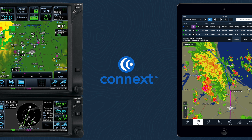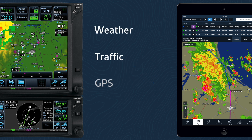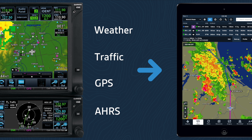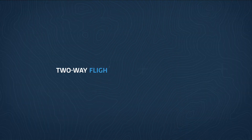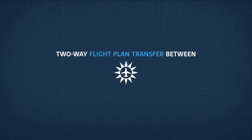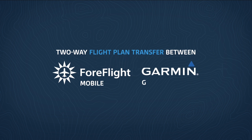ForeFlight Mobile receives ADS-B weather and traffic, GPS position data, and AHARS for backup attitude views from your Garmin panel. And now you can take advantage of two-way flight plan transfer between ForeFlight Mobile and Garmin GTN and GNS Navigators, a capability that saves you time and gets you in the air faster.